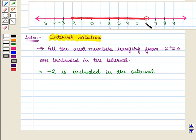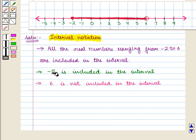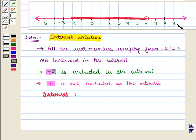Now for the included point, that is minus 2, we use a square bracket. So from the given number line we get the interval as a semi-closed interval from minus 2 to 6.